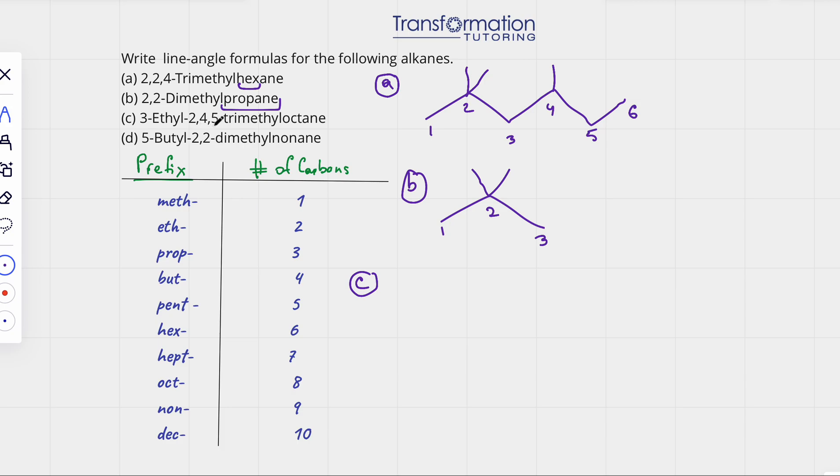And let's go to C. 3-ethyl-2,4,5-trimethyloctane. So again, we start at the end. Octane. Oct means 8. So I'm going to draw an 8-carbon chain. 1, 2, 3, 4, 5, 6, 7, 8. And next, I'm going to number it: 1, 2, 3, 4, 5, 6, 7, 8. So I numbered my carbons.